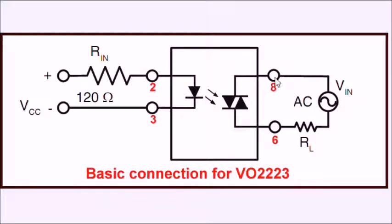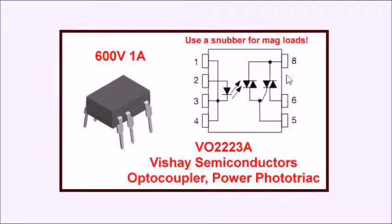The load is generally connected between pins 8 and 6, and you're utilizing the internal triac to carry your load. 600 volts, 1 amp, it's a pin of an 8-pin IC, not bad. And it's a PC board mount.